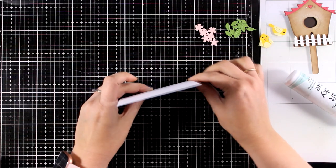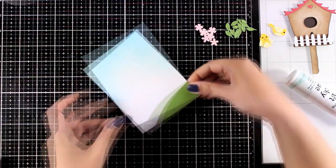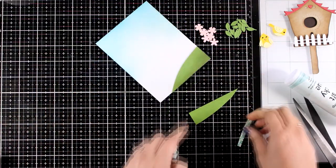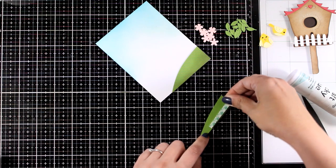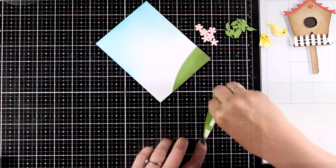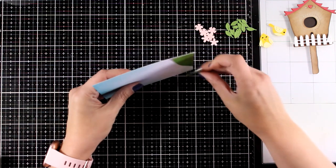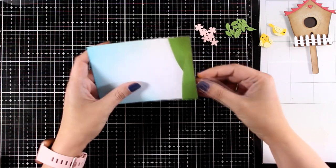Now all my elements are ready it's time to put my card together. I'm going to stick down the little hills and for the one of them I'm going with glue completely flat, for the other I'm using foam tape so that it is a little bit popped up.